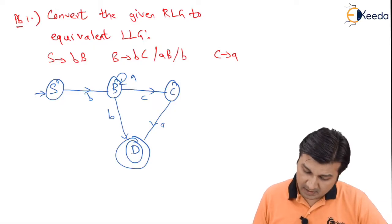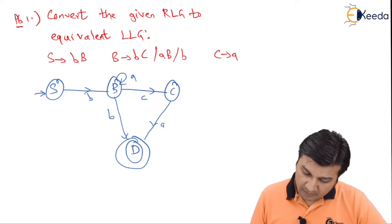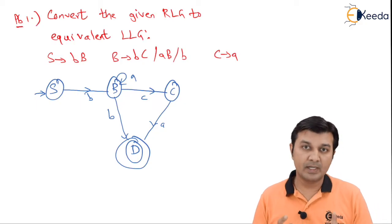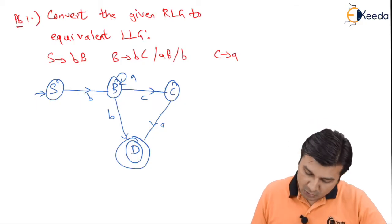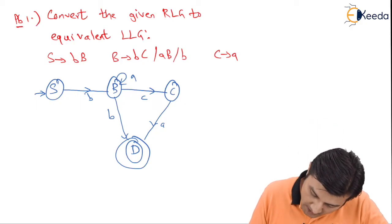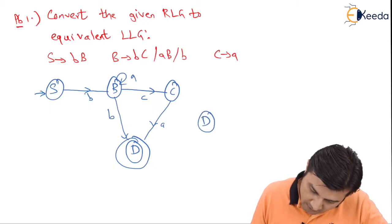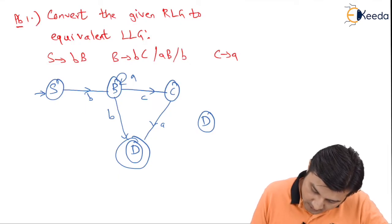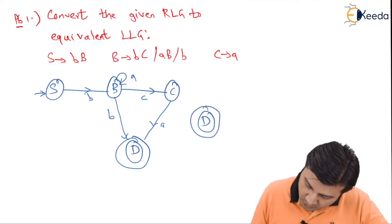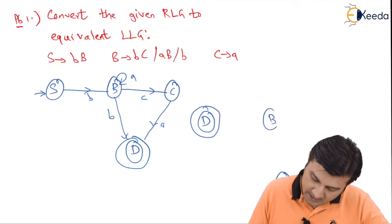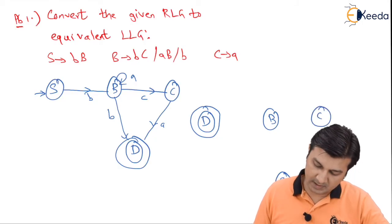The second step says that once you are done with that, you are going to interchange the initial state and the final state — that is, I will be interchanging S and D. So D is going to come over here as the start state, and S will take the position of D as the final state, while B and C remain as they are.